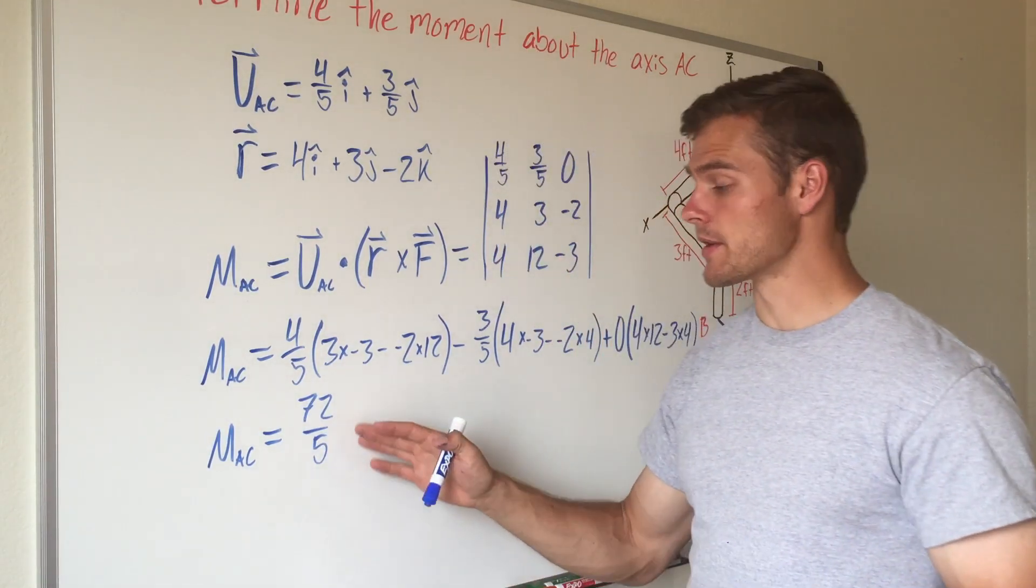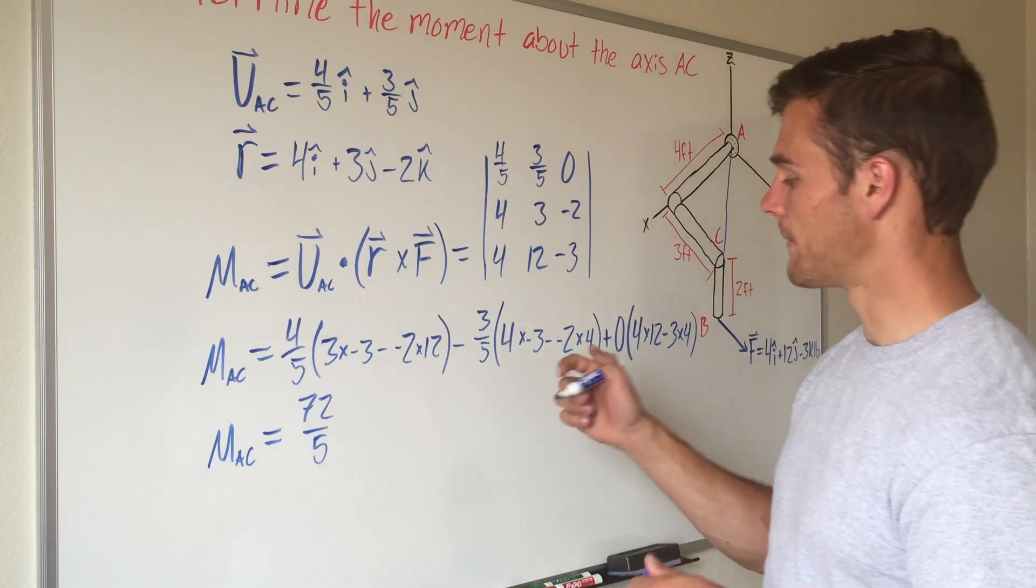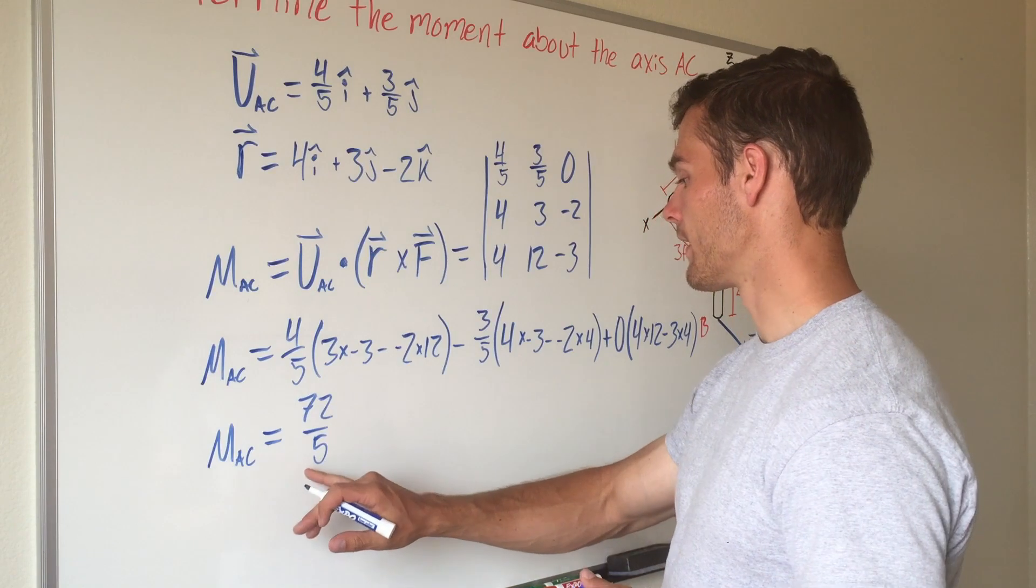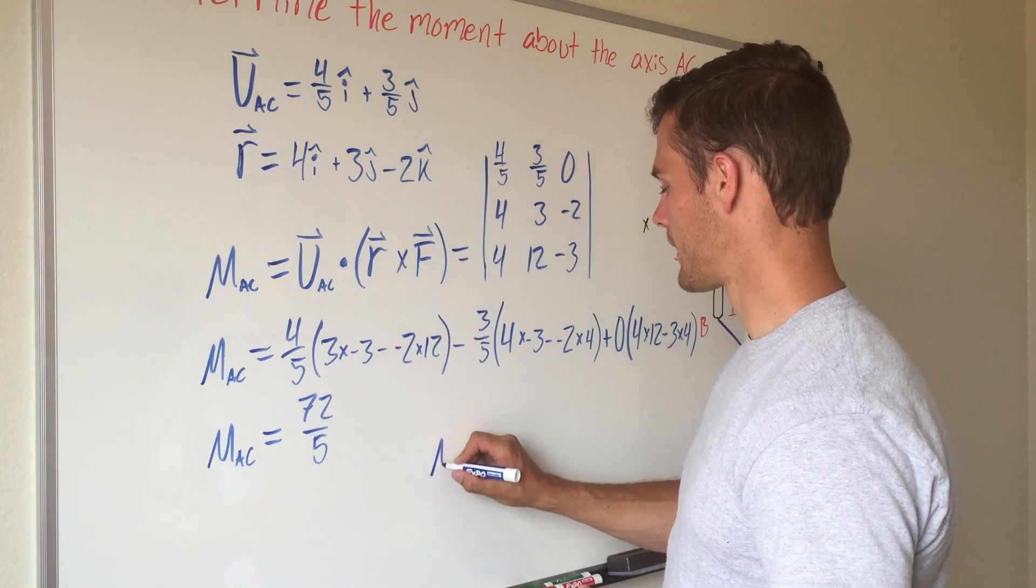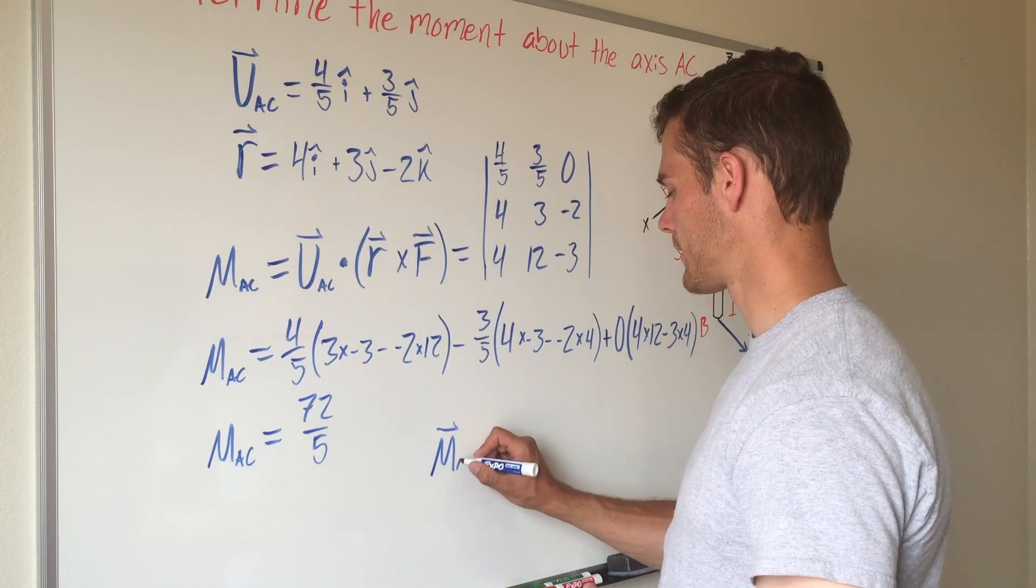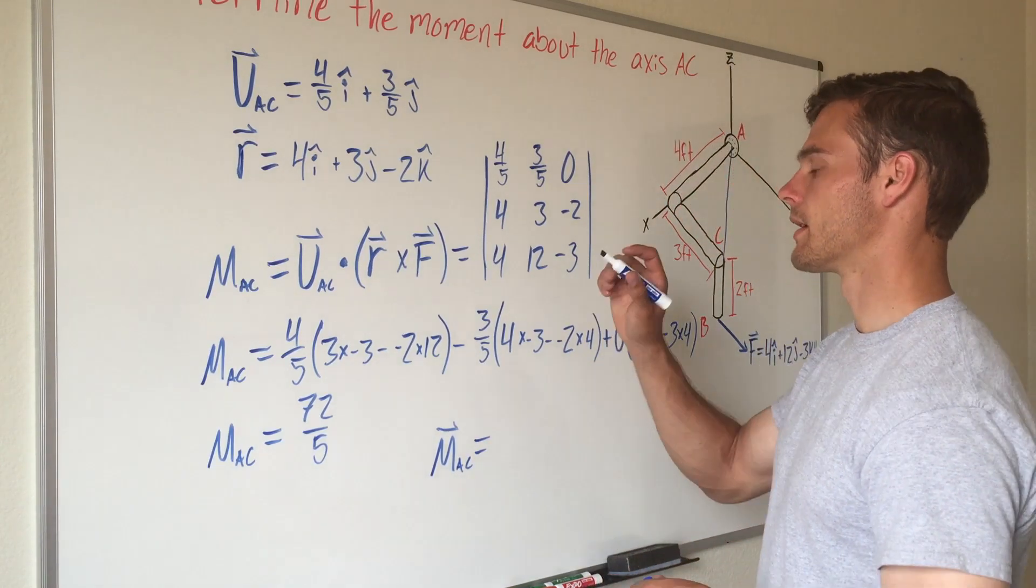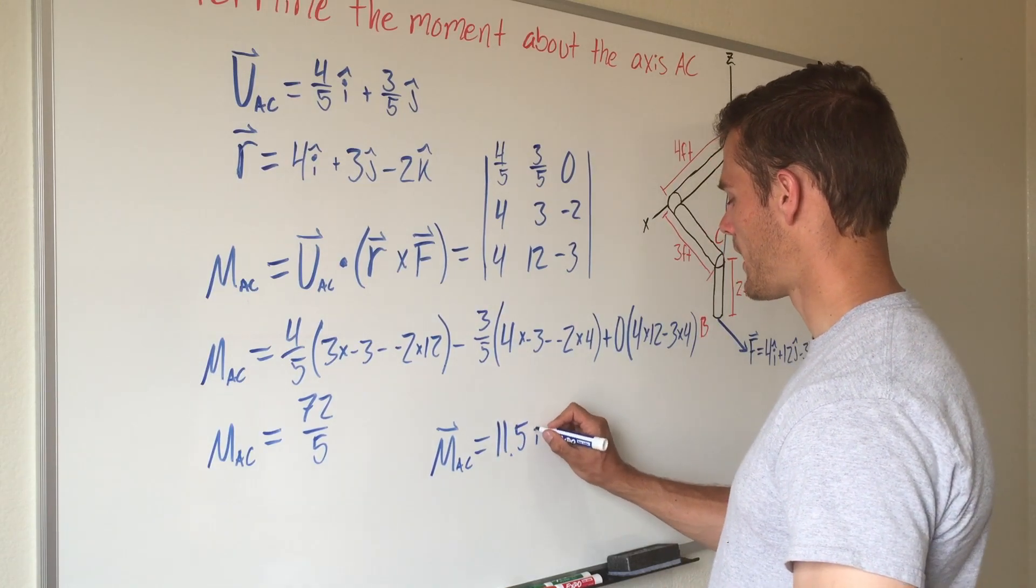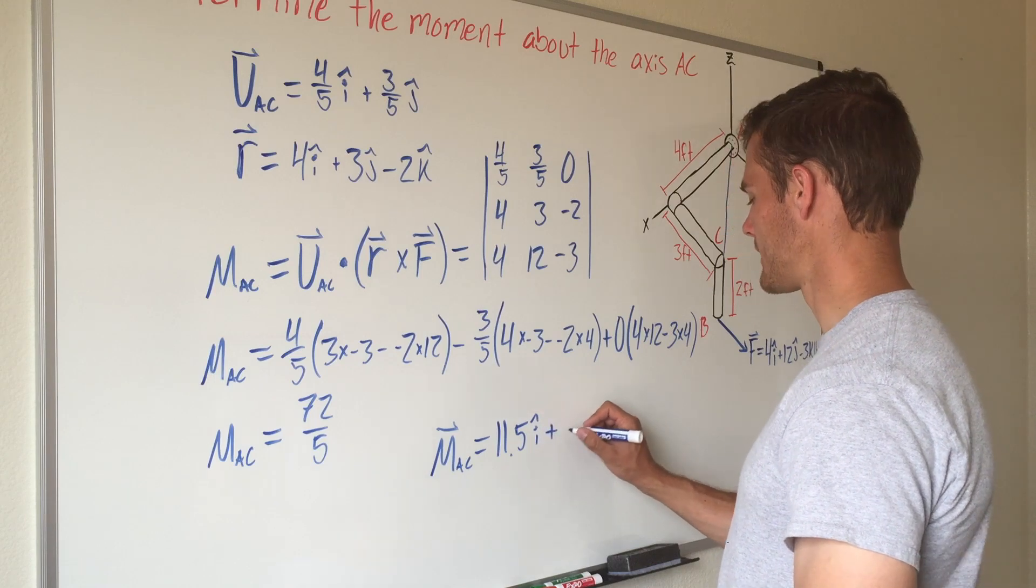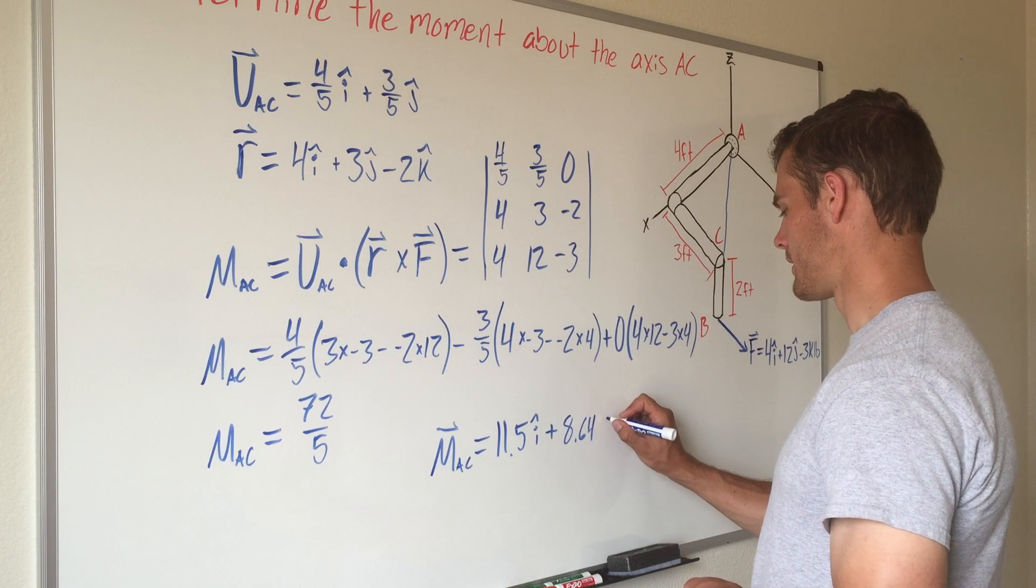So that gives us a magnitude, but if we want to find a vector representing that moment we can multiply our magnitude by our unit vector and we'll end up getting that our moment about AC equals, I'm going to round it to a decimal approximation, 11.5i plus 8.64j.